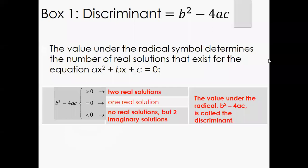So in box one, we're going to further talk about the discriminant. Your discriminant is what's underneath your square root, which is the b squared minus 4ac part.